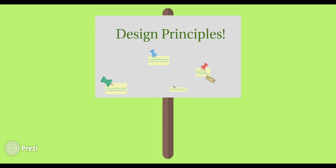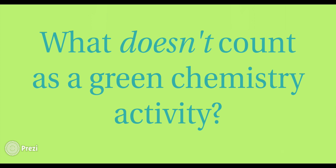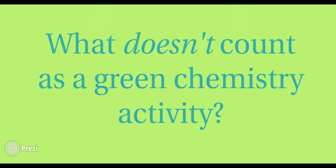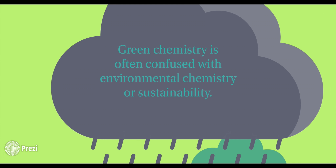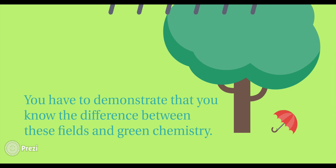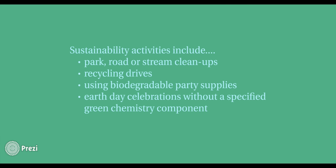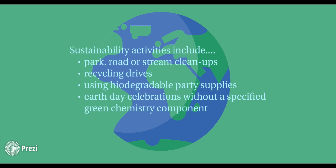Which leads us nicely to the next part of this video: what doesn't count as a green chemistry activity? Green chemistry is often confused with environmental chemistry or sustainability. But to earn a green chemistry student chapter award, you have to demonstrate that you know the difference between these fields and green chemistry. Ineligible activities that fall into the sustainability category include things like park, road, or stream cleanups, recycling drives, or using biodegradable party supplies.